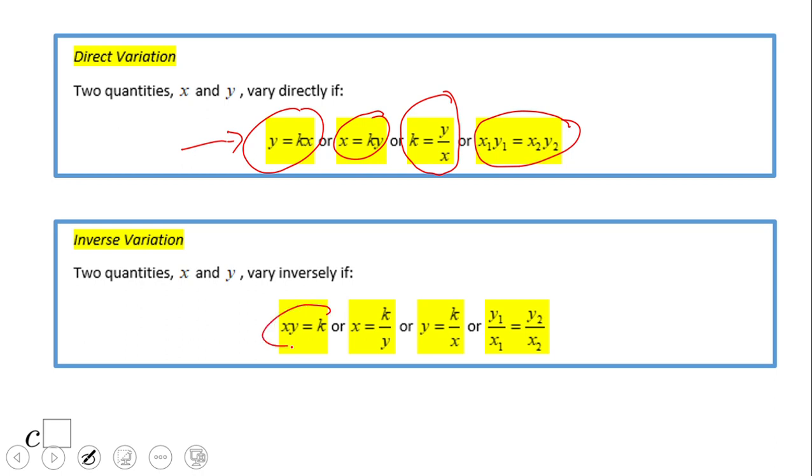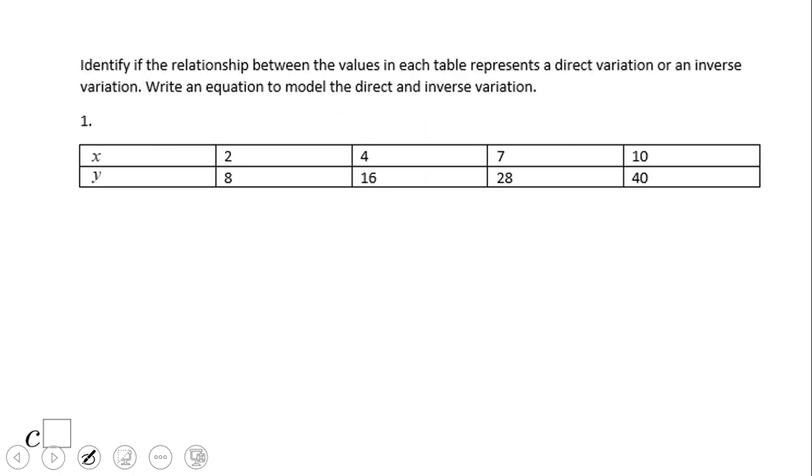Inverse variation: this is the one that we're going to use most of the time. These two also are good, and this one whenever you have to find some missing values. So let's see some examples. First of all, we're going to look here and see is this direct variation or inverse variation.